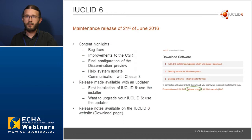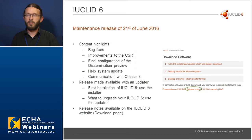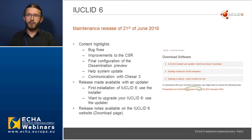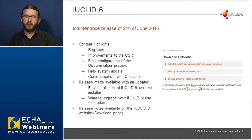On the 21st of June 2016, we released a first patch or maintenance release to address some bugs discovered since the end of April. We also made improvements to the CSR and provided the final configuration of the dissemination preview for REACH dossiers. The help system was updated and we implemented a communication plugin to allow the exchange of data between IUCLID 6 and CSR3. This maintenance release was made available with an updater, so if you had IUCLID 6 installed you were able to upgrade your installation to the latest version.